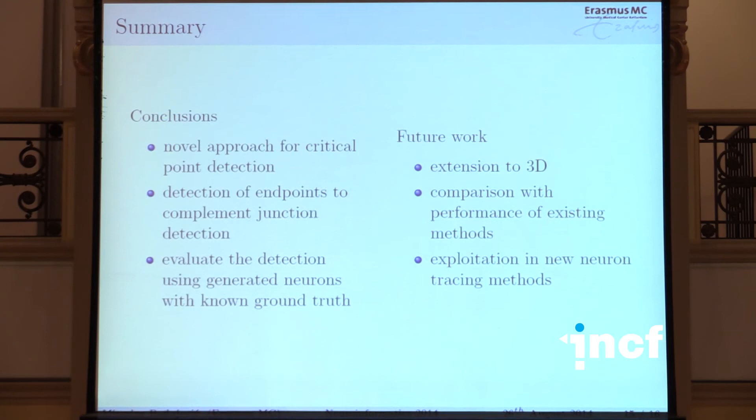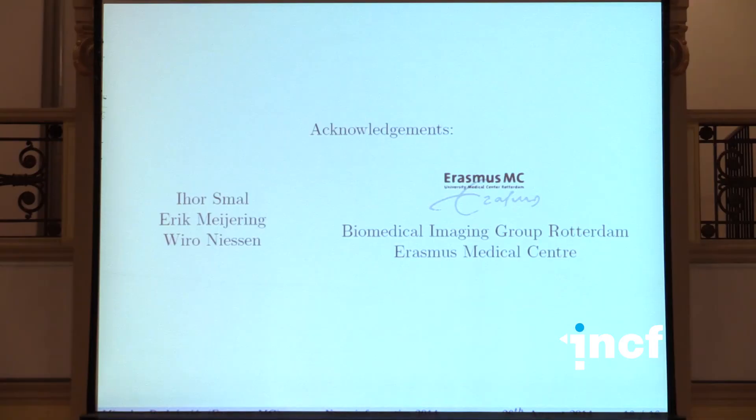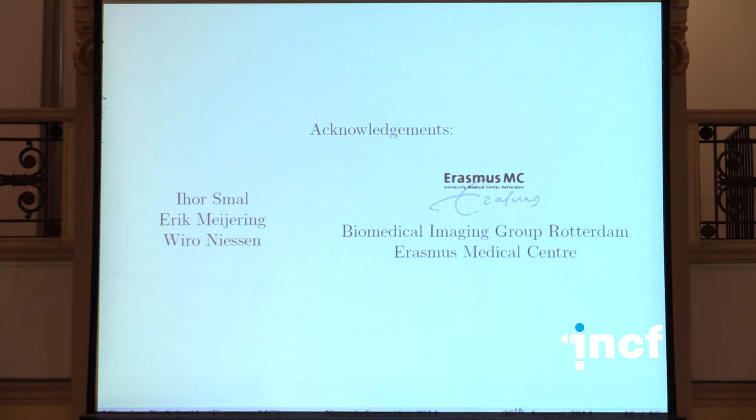To summarize, I've presented a novel method for detection of critical points in neuron images, extended to detection of endpoints — the tips of neuron branches. There's also a scheme using generated synthetic neuron images which already have ground truth, addressing the lack of standardized ground truth. For future work, the algorithm can be extended to 3D, compared with other algorithms, and used for neuron reconstruction and tracing. Thanks to my colleagues from Erasmus MC — any questions?